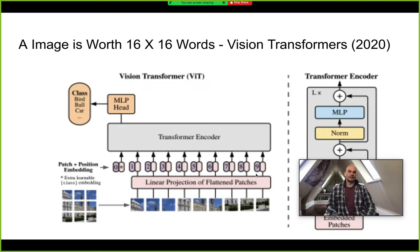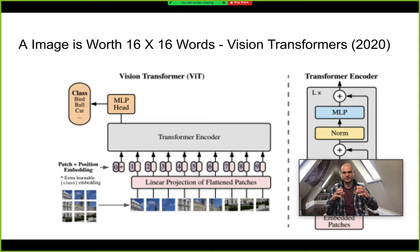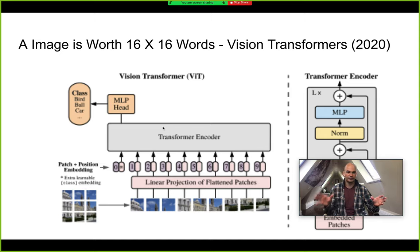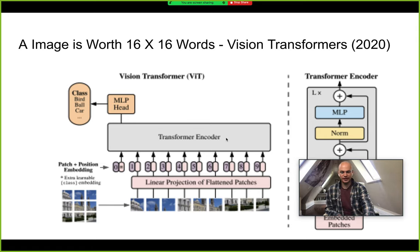One exciting development last year was the paper 'An Image is Worth 16x16 Words,' which introduced the vision transformer. Instead of a text sequence, you have image patches — you chop your image up into a linear projection of flattened patches and use those as features passed through to the same transformer encoder. Underneath the hood, this transformer encoder is essentially the same PyTorch code whether you're in NLP or computer vision, and you just let the attention mechanisms do the rest.